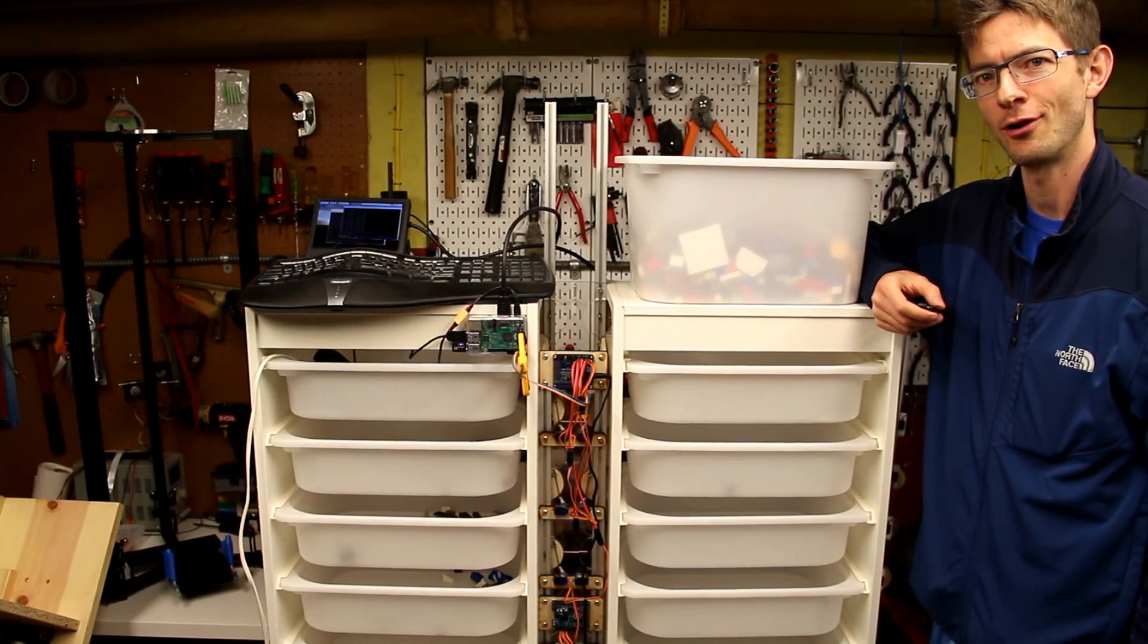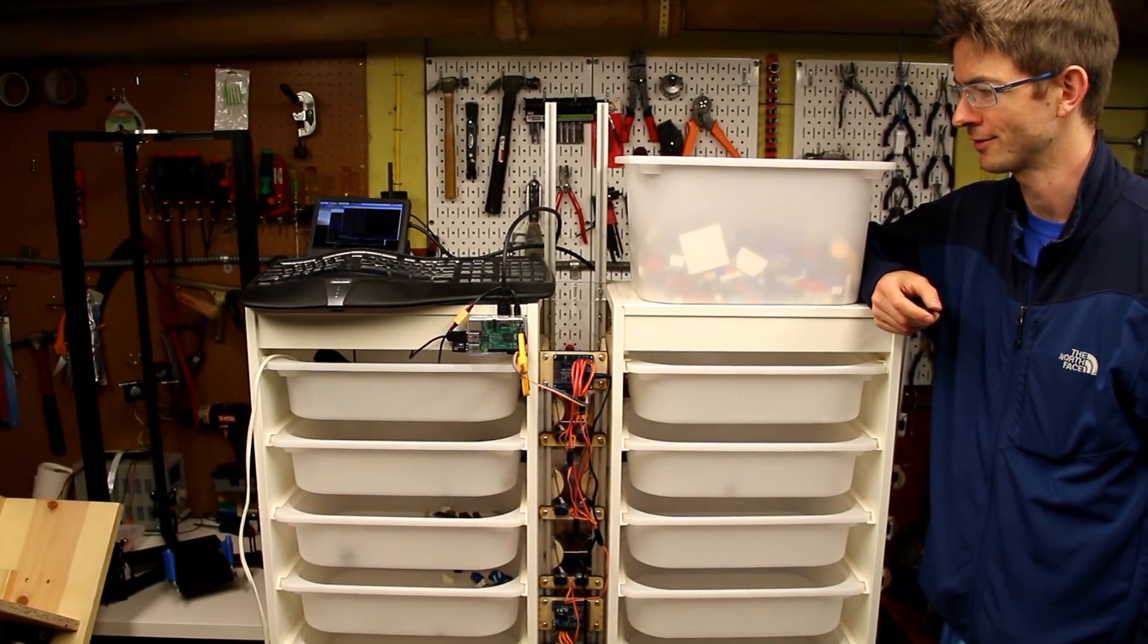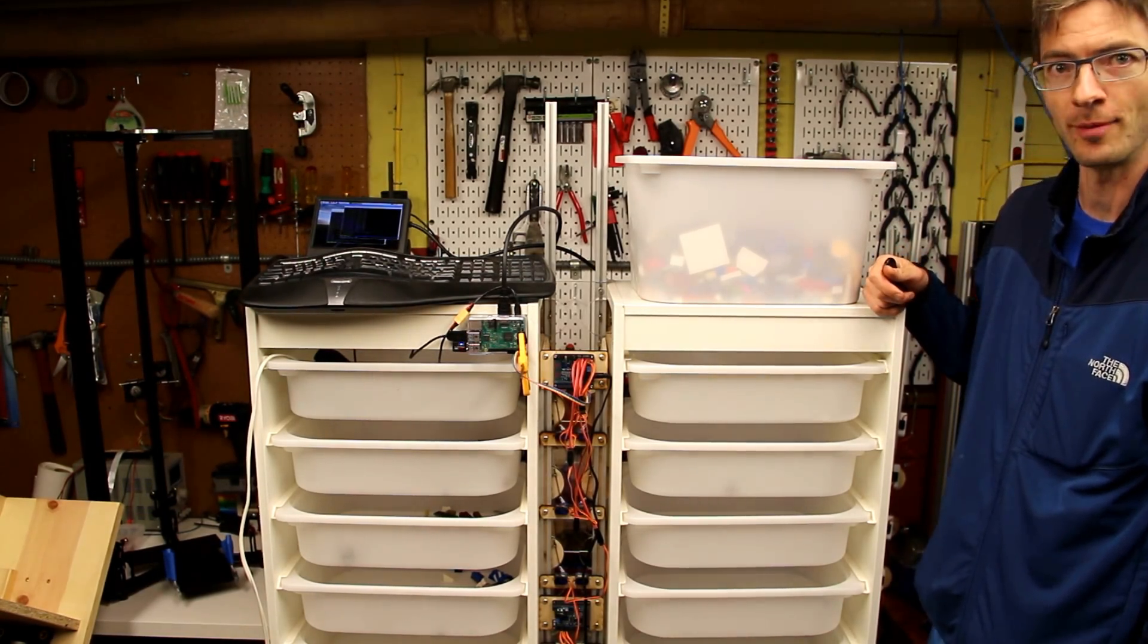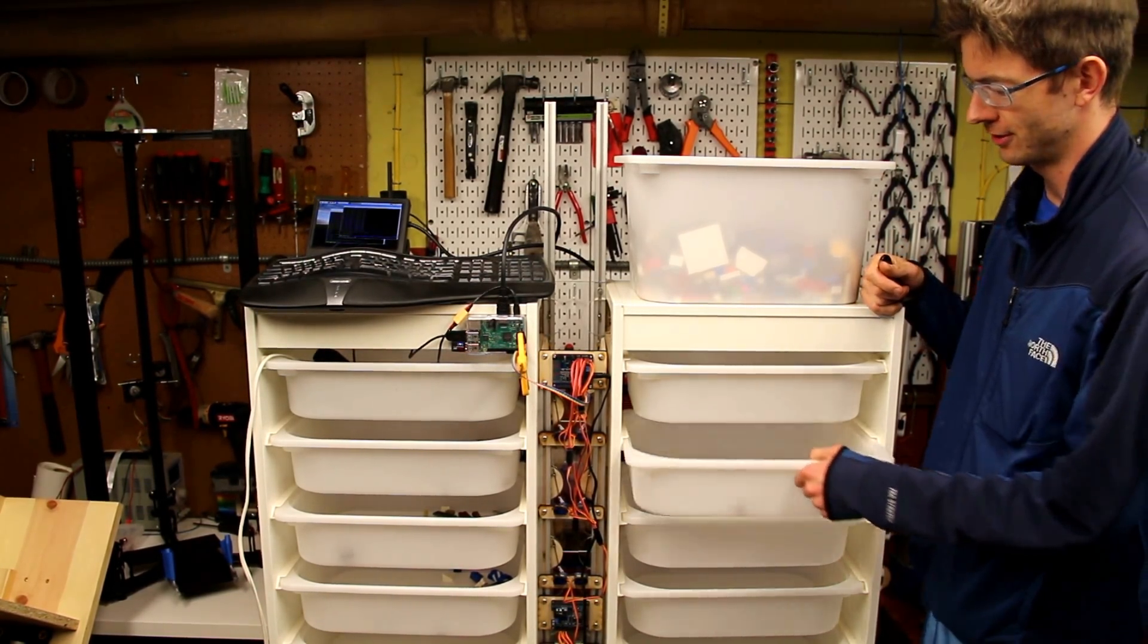Here's another iteration of my LEGO sorting shelf project. It consists of two Trufast shelves from IKEA with these drawers that you can take out.